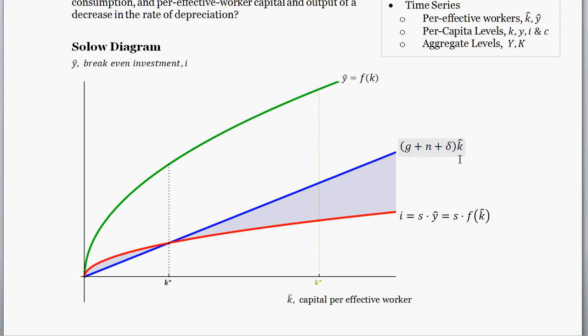So let's look at the diagram and think about a change in the depreciation rate. In our model, the depreciation rate is represented by delta. I'm going to assume that we are in the steady state before we get this change, so capital per effective worker is at the value k star.